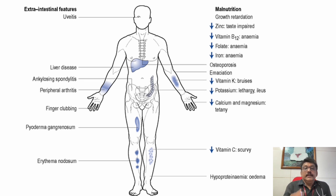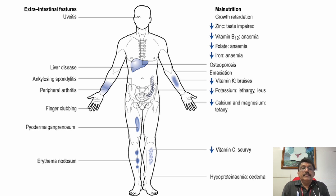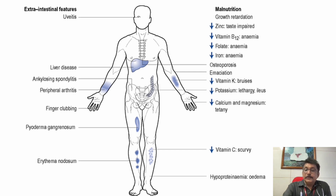This picture shows the various problems produced by ulcerative colitis or Crohn's disease and their extra-intestinal features. A lot of vitamin deficiencies can be seen in IBD patients. Patients can have protein malabsorption and vitamin malabsorption, and can even develop protein-losing and blood-losing enteropathies. So patients can have anemia, various vitamin deficiencies, and protein deficiency.